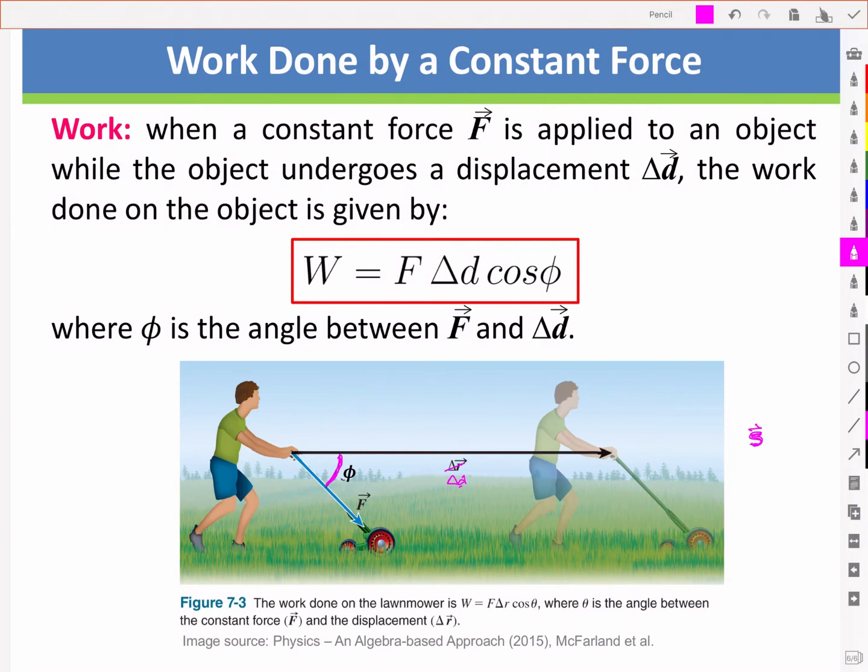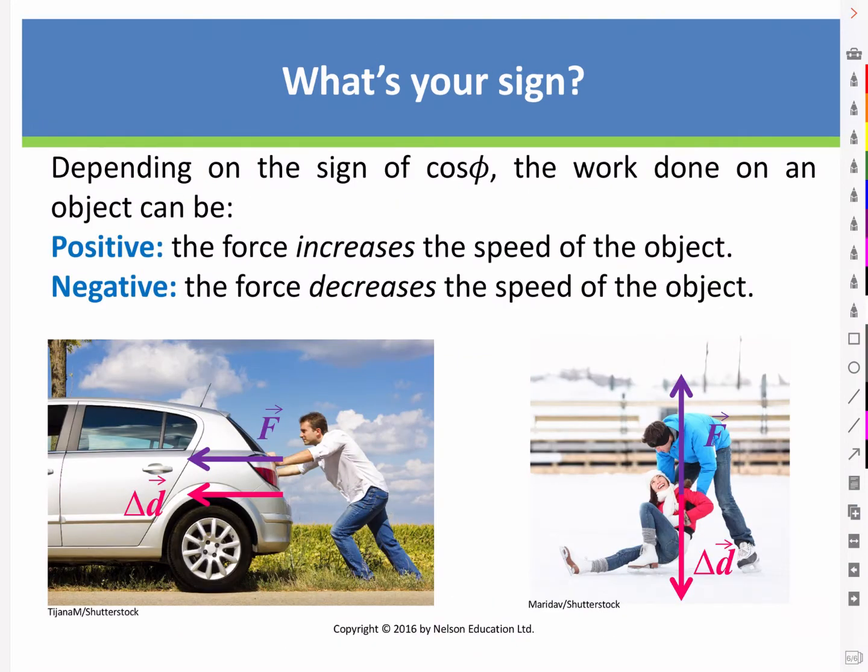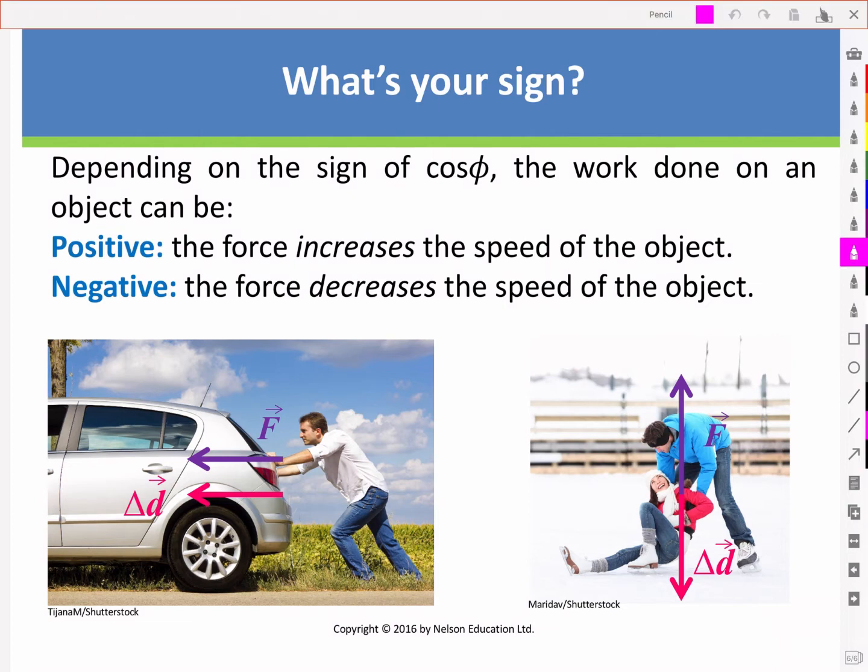Let's dig a little deeper into that expression. Depending on the sign of cos phi, the work done on an object can be positive, meaning the force increases the speed of the object, like we have here on the left as in pushing a car, or negative, meaning that the force decreases the speed of the object, such as in slowing someone's fall.